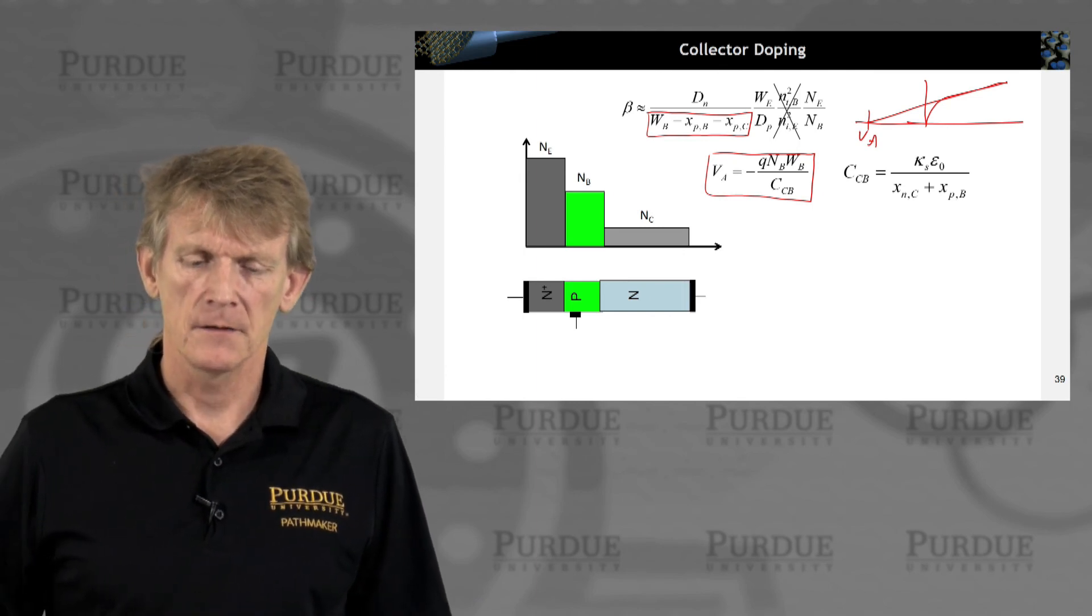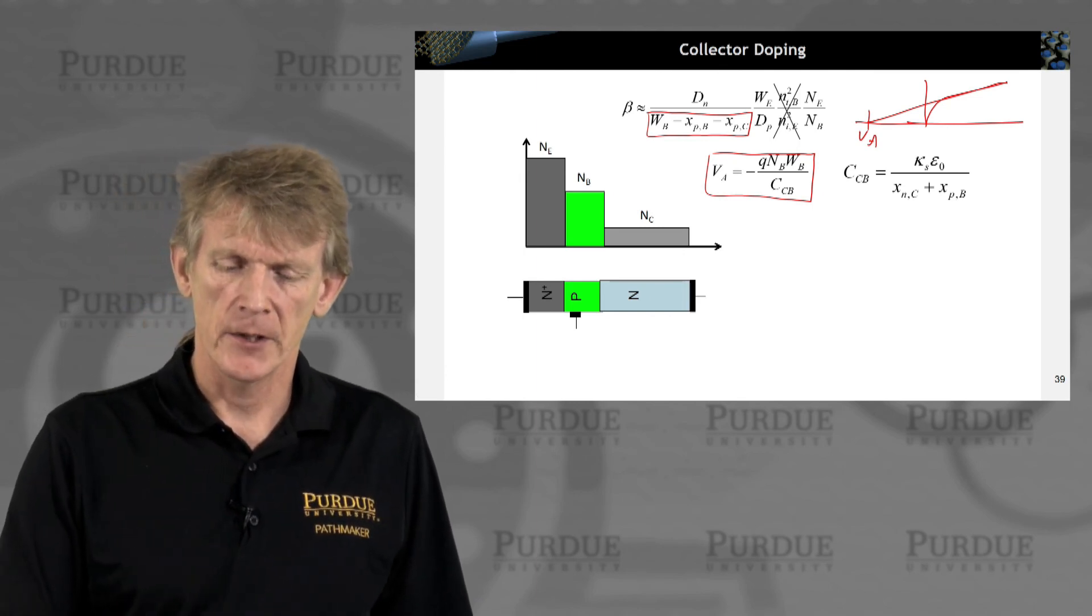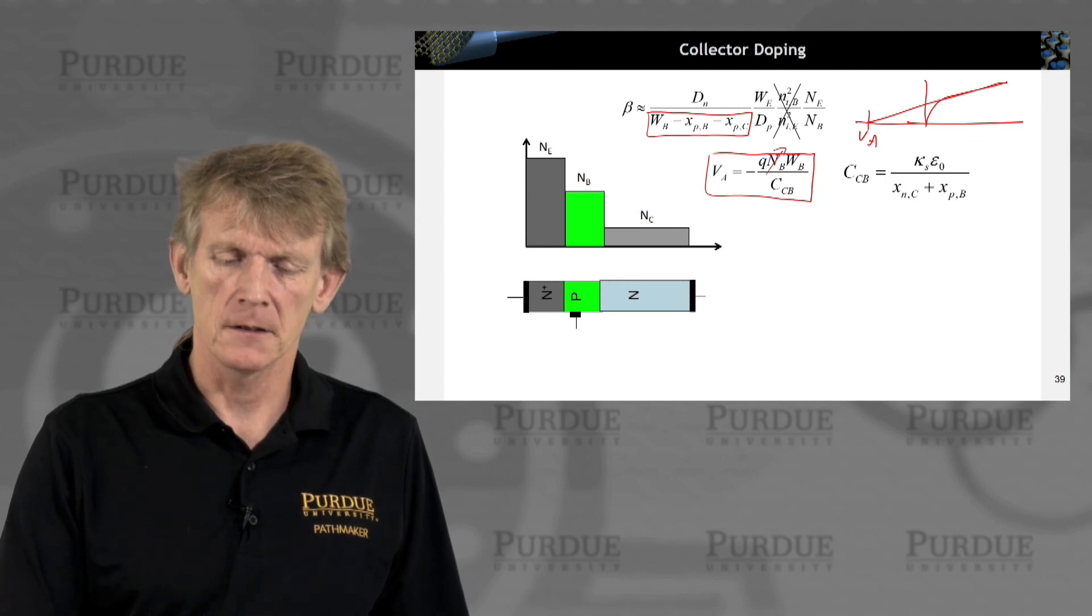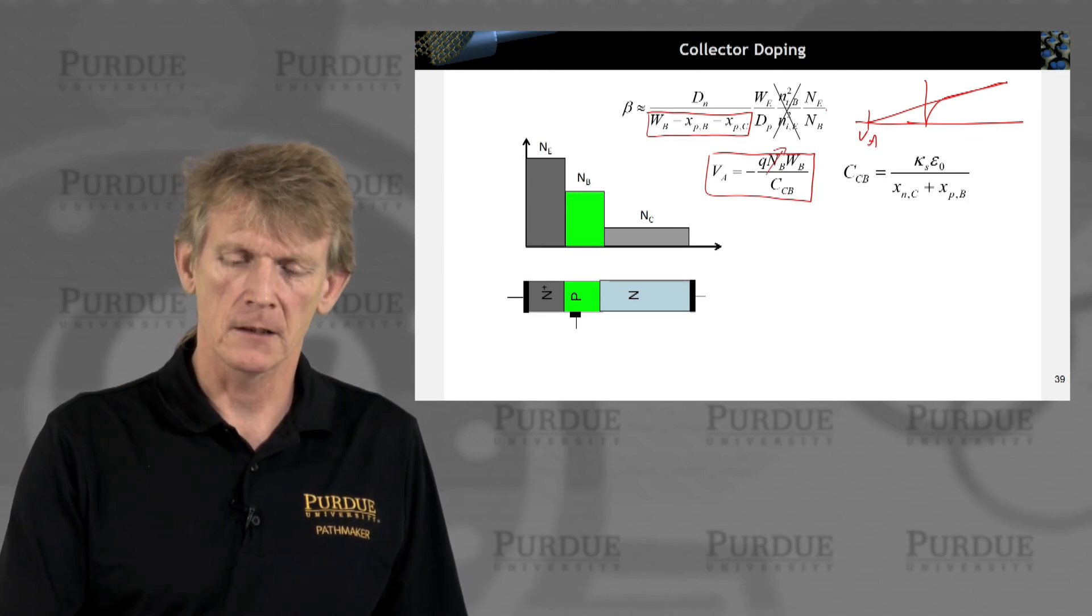On the other hand, if we increase NB here, that would mean beta goes down.